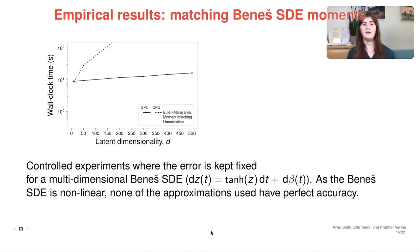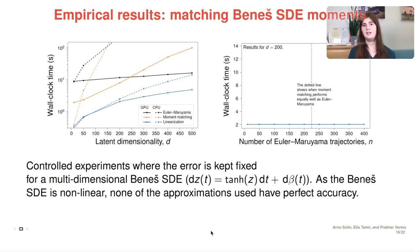So here you can see first the Euler-Maruyama, then the moment matching, and then linearization results. So as you can see, linearization is a lot faster than the other methods, both on GPU and CPU, and moment matching tends to be a bit slower than Euler-Maruyama in high dimensional problems.